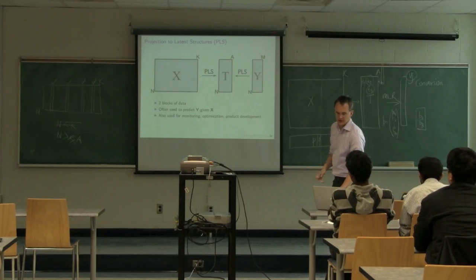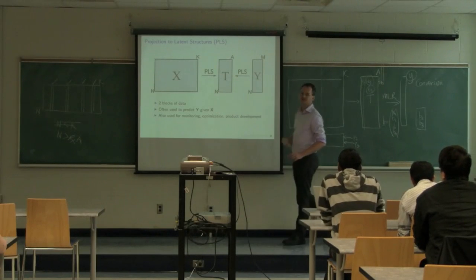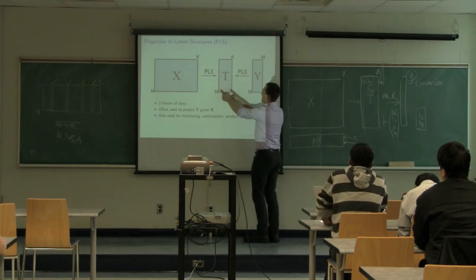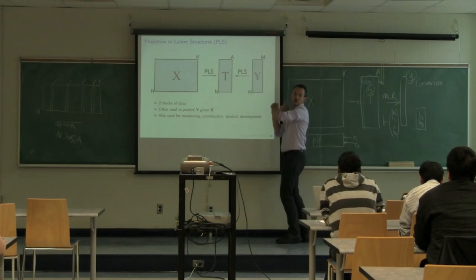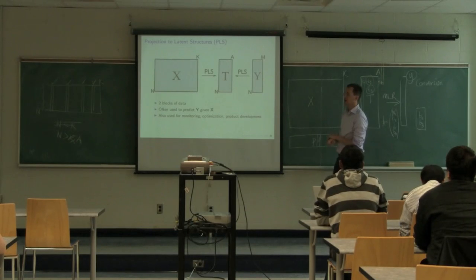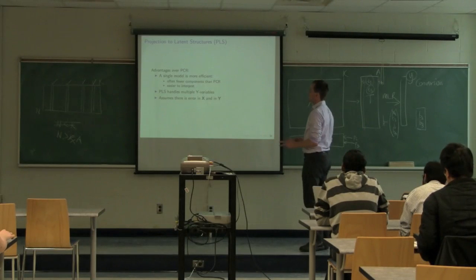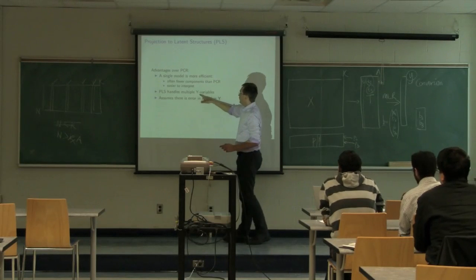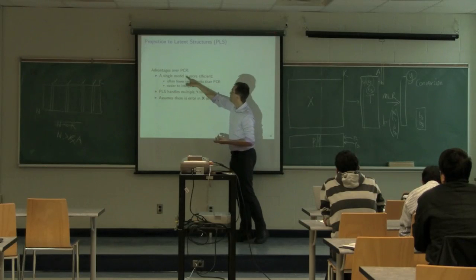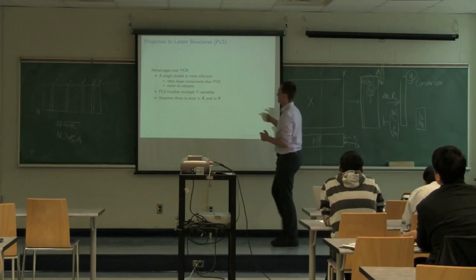Wouldn't it be great if we could calculate scores T using information from both blocks simultaneously? In the future when we only have X, we want to get T and then go from T to get Y predicted. But when we build the model, we really want both the X and Y space to contribute simultaneously to the calculation of the scores — so that those scores in T actually incorporate some information about the Y variable.